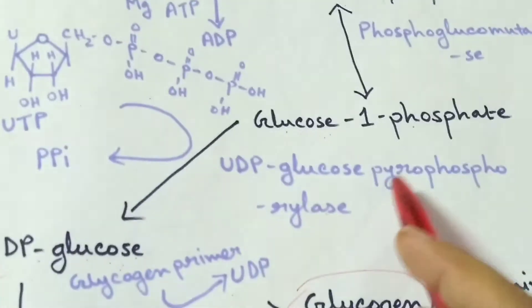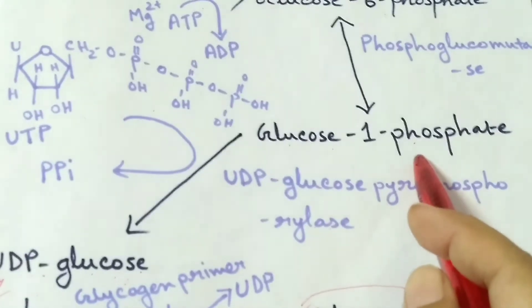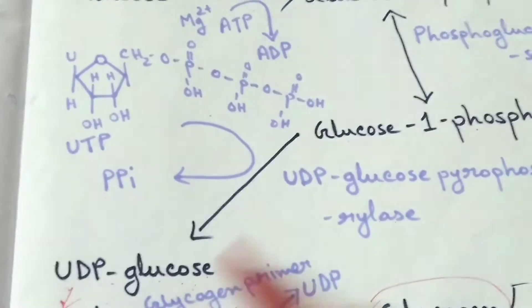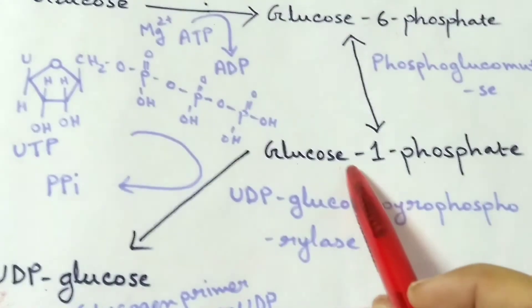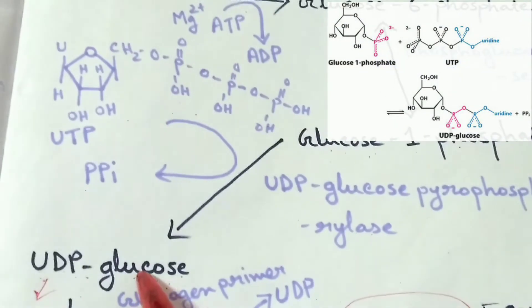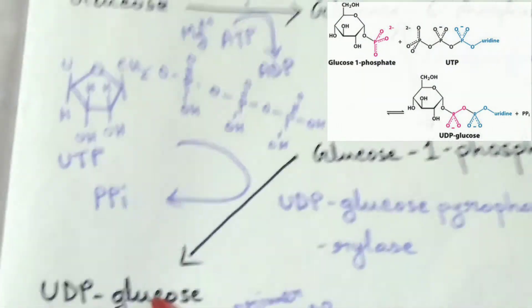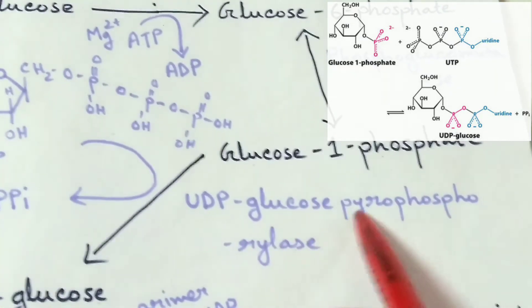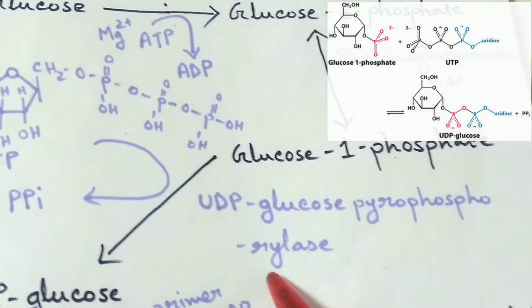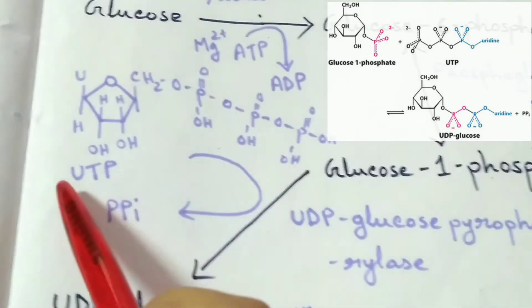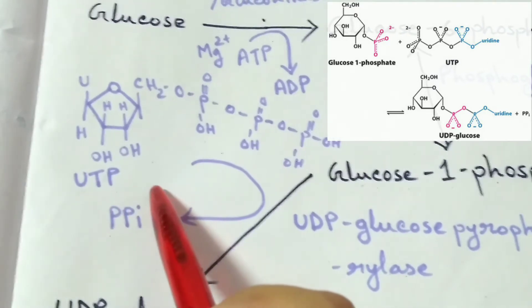In the next step, glucose-1-phosphate is converted into UDP-glucose by means of enzyme UDP-glucose pyrophosphorylase, in the presence of UTP, that is uridine triphosphate.